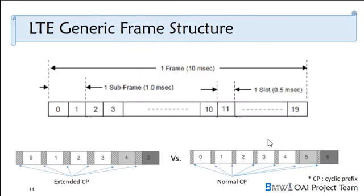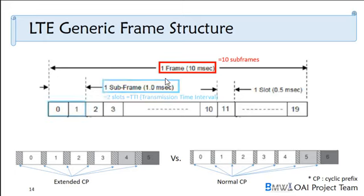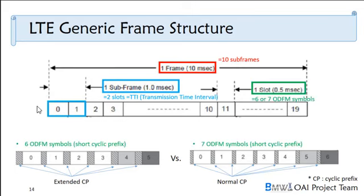This is the LTE generic frame structure. In one frame there are 10 subframes. In one subframe there are two slots. In one slot we have either six or seven OFDM symbols. Six OFDM symbols have a long cyclic prefix, and seven symbols have a short cyclic prefix.